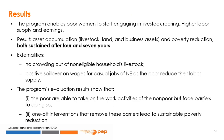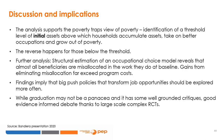The results showed that asset accumulation and poverty reduction were sustained after four and then seven years, with no crowding out of non-eligible households' livestock. They found positive spillover on wages for casual jobs as the poor reduced their labor supply. The program evaluation showed that the poor are able to take on work activities of the non-poor but face barriers to doing so, and this program removed those barriers leading to sustainable poverty reduction. This analysis supports the poverty trap view of poverty.